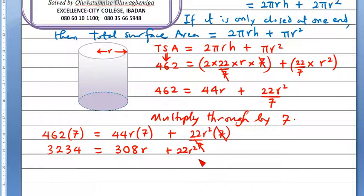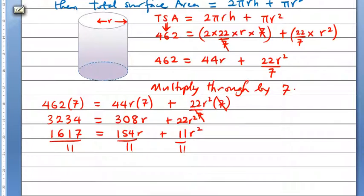Now, this is somewhat like a quadratic equation. Let's divide through by 2. 1617 is equal to 154 r plus 11 r square. Let's see whether 11 can still divide all these. Let's try dividing by 11 and see whether we can still reduce it further.